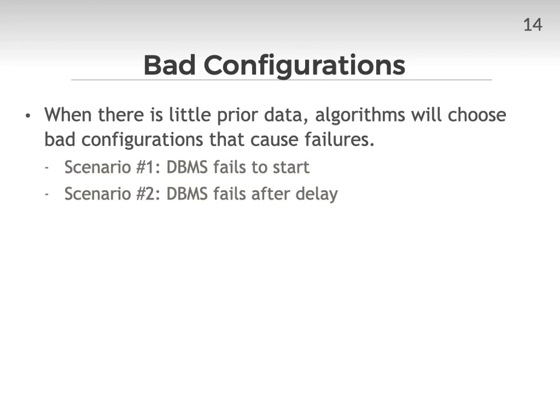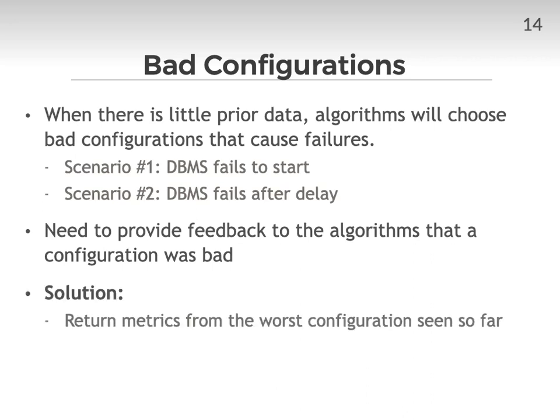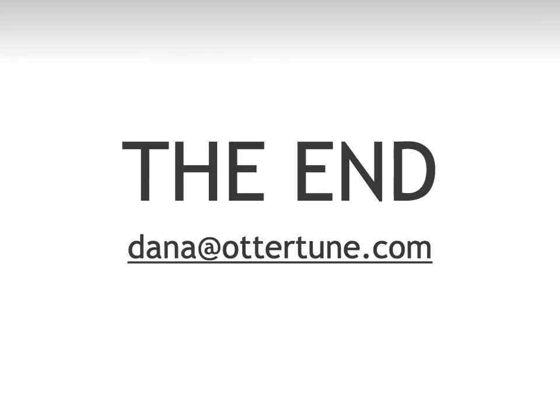When there is little prior training data, such as at the start of a tuning session, the tuning algorithms will choose bad configurations that can cause failures. There are two failure scenarios: the first is that the DBMS refuses to start because the knob settings are invalid; the second is that the DBMS will start but then crashes at some point during the workload replay. For Oracle, this can happen if the buffer pool size is set too large since it allocates this memory incrementally. It is important to indicate these failures to the ML algorithms so that they learn this was a bad configuration, but we must decide what metrics to use for training since metrics from a delayed crash may not be scaled correctly, and the algorithms could incorrectly learn that a bad configuration improved the target objective. And that brings us to the end of this talk — thank you for attending and please reach out with any questions.